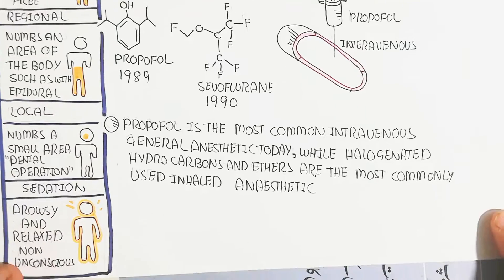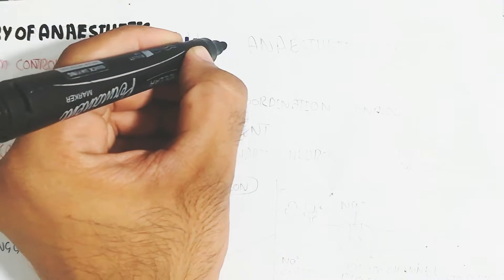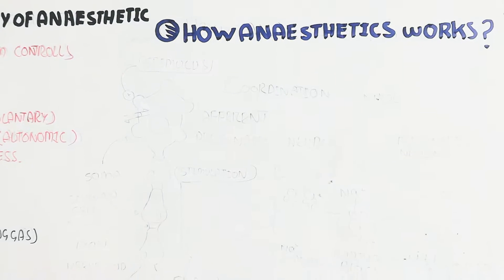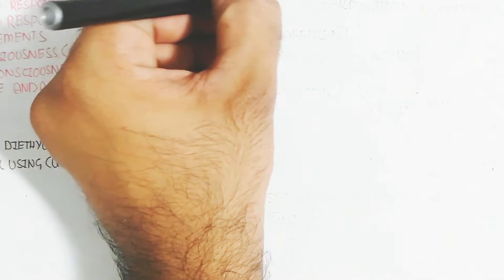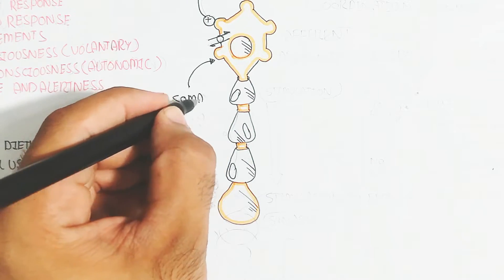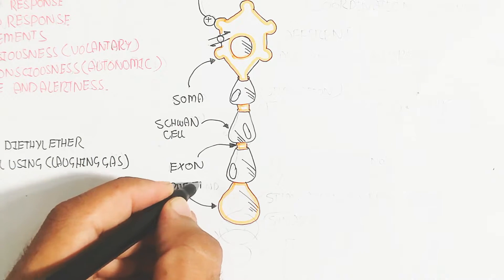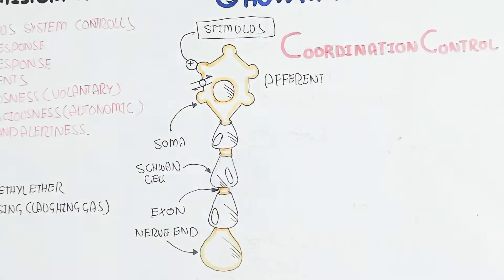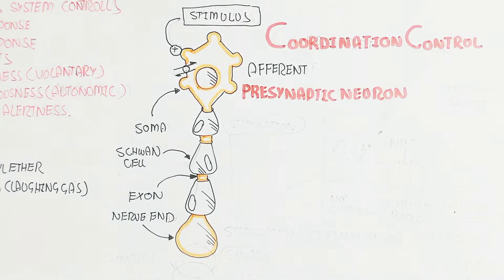Let's understand how anesthetics work. First, we look at coordination and control: when a stimulus stimulates the afferent sensory neuron, the sensory neuron receives the signal and fires, causing depolarization. The neuron contains the soma, Schwann cell, axon, and nerve end. The signal moves through saltatory conduction from the afferent neuron toward the interneuron.